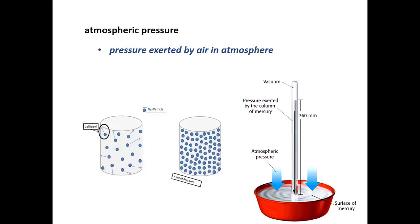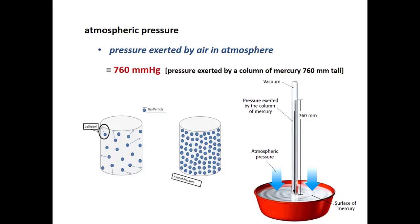Atmospheric pressure is the pressure exerted by the air in the atmosphere. All of the air molecules in the atmosphere exert a certain amount of pressure. Atmospheric pressure is lowest closest to the surface of the Earth at sea level, and as you go up in altitude there are fewer air molecules pressing down on you. At sea level, atmospheric pressure is 760 mmHg — a number you should know, and approximately the atmospheric pressure in Victoria.